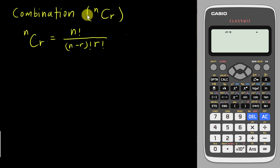For combination nCr it has its own formula which is n factorial over (n-r) factorial times r factorial. For example, let's say I have 7C4. I can straight away use the calculator to get the answer. 7C - C is above the divide button - 4, which equals 35.